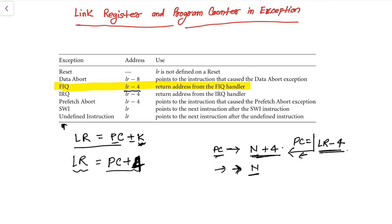The return address from the FIQ handler is LR minus 4, and from the data abort handler it is LR minus 8. From the SWI and undefined instruction handler, it is just LR — meaning in that case it automatically saves the same address without any addition, so the offset is 0. Same address means the address where the program counter is pointing.